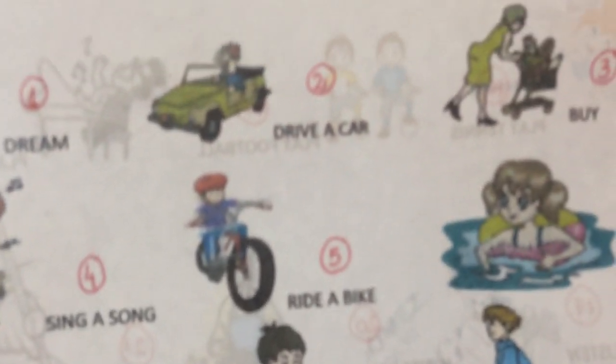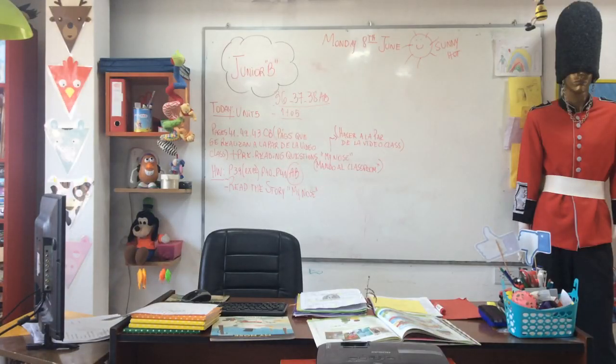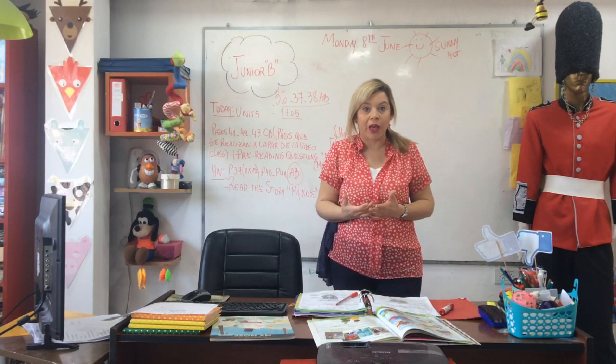So we have: dream, repeat, drive a car, buy, sing a song and ride the bike. Ride the bike, sing a song — vos tenés tu lista en casa — drive a car and dream. So these were the five verbs.